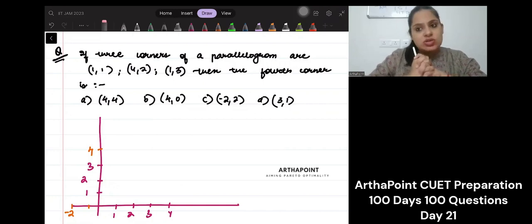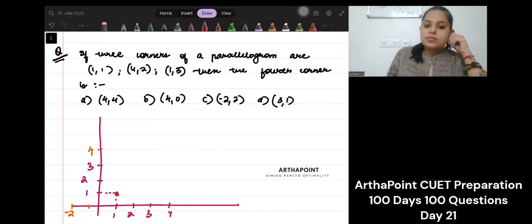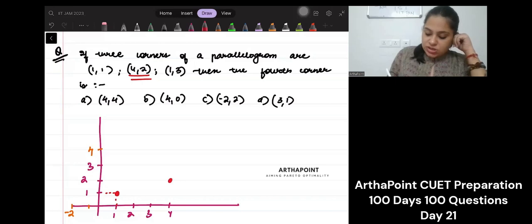Most of you, if you pause your screen and try to do it, would do this wrong. I'm telling you. What would you do? You will go ahead and make this (1,1) here, right? And then the fourth coordinate is (4,2). So you would have it here, right? And the third coordinate is (1,3). So you will have it here.